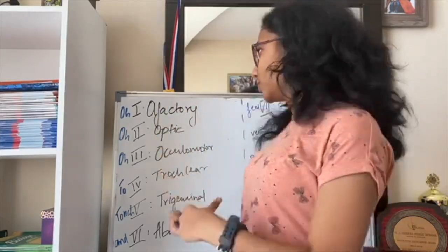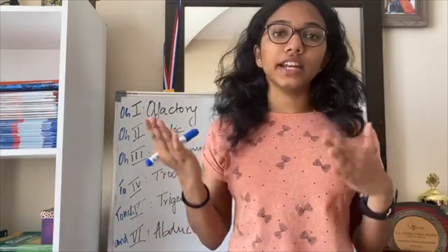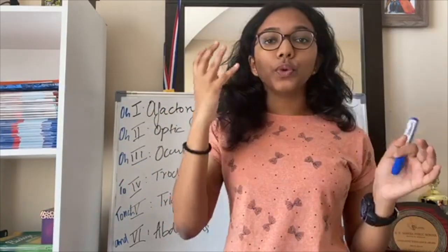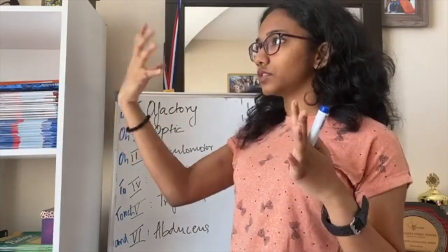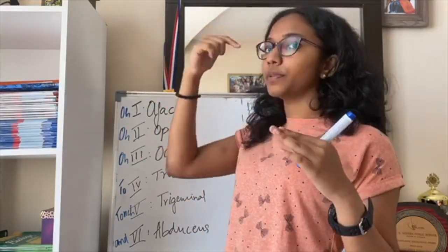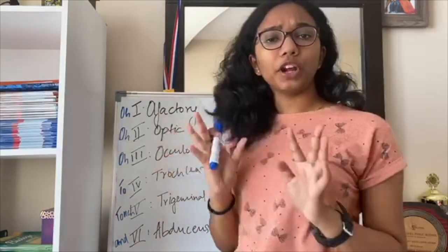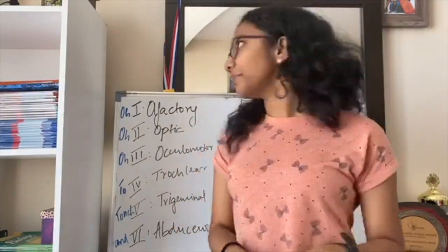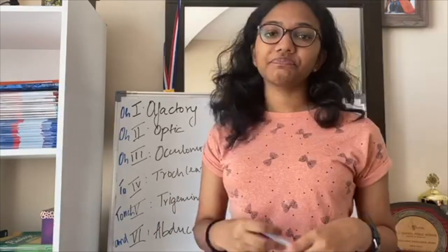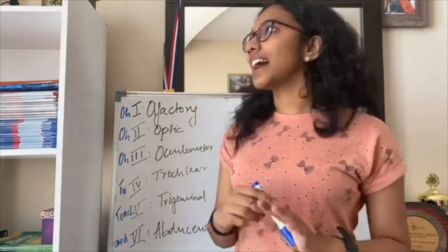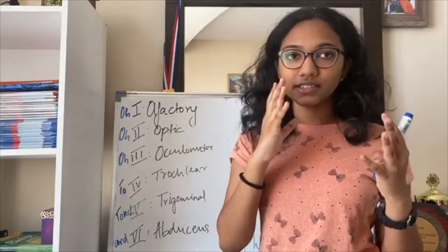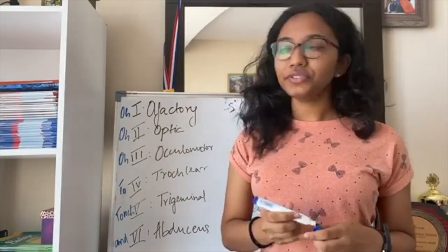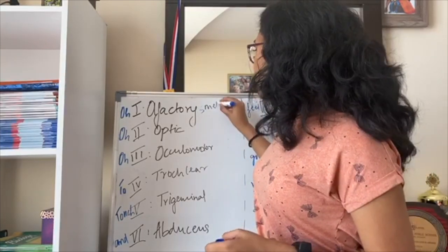The 12 cranial nerves are arranged in Roman numeral order according to which nerve comes first when looking from the front. The first one is olfactory. You've been learning since grade 10 that olfactory refers to the nose and things related to smell. So this nerve is used for smelling, and since it detects sensations, it is a sensory nerve.